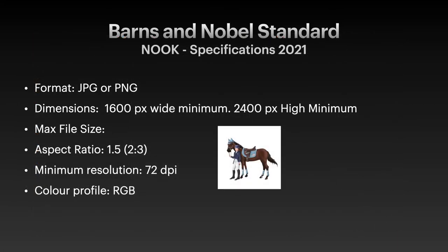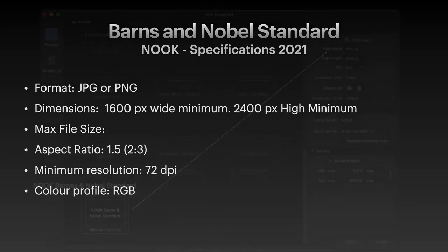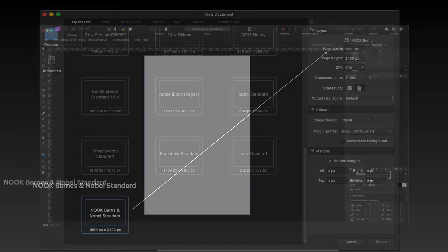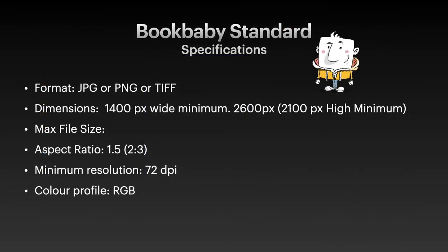Barnes and Noble — the Nook specifications. Format JPEG or PNG. Dimensions 1600 by 2400, which is an aspect ratio of 1.5 or 2 to 3. They don't appear to have a maximum file size. They have a minimum resolution of 72 DPI, and you can make it more than that — I'd certainly advise it, because although the original Nook was not high resolution, the newer ones are. That's what it looks like in your preset, and you can pause these pages to find out where you need to go.